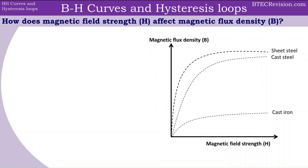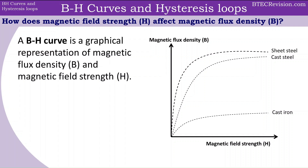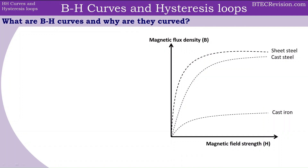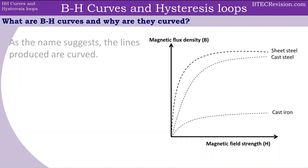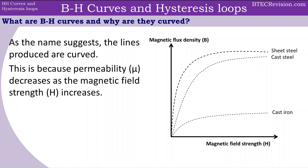How does magnetic field strength affect magnetic flux density? A BH curve can be used — it is a graphical representation of the magnetic flux density and magnetic field strength. The lines produced by this graph are curved, and the reason is because of the permeability, as covered in previous lessons. This permeability decreases as the magnetic field strength increases.